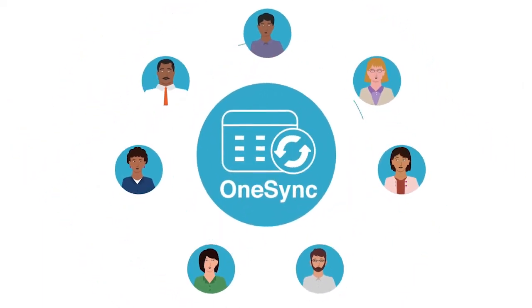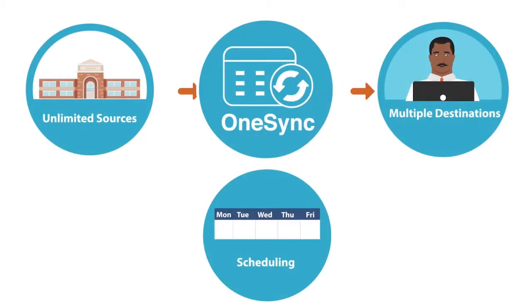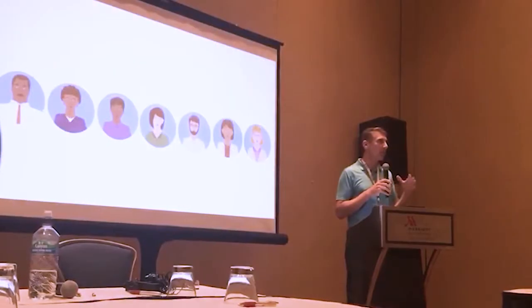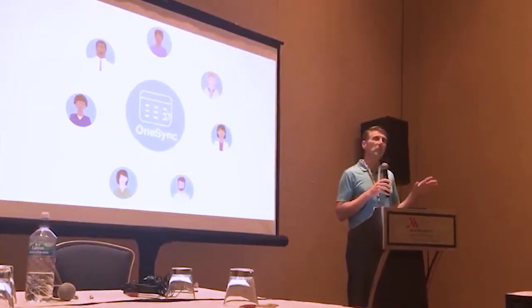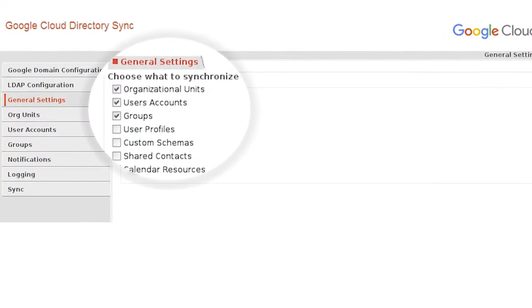You're doing the rostering stuff for us, you're taking care of the single sign-on. This area is really a challenge for us and there doesn't seem to be a good solution in the marketplace. Right now we use GADs and GAPs to get our users up into Google and to sync passwords, but it's a little clunky to use. So we're interested to see if OneSync is going to solve that problem for us.